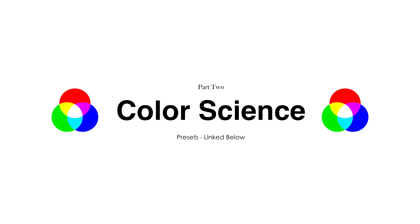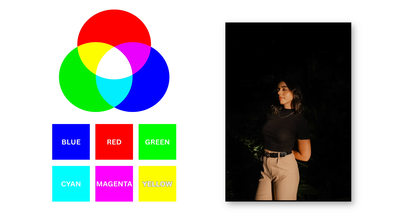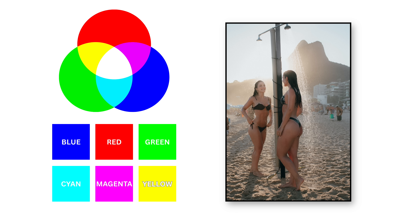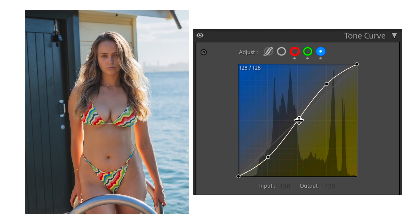We all know that an image is made up of red, green, and blue pixels — these are the primary colors of light. When they're mixed together they form secondary colors, and when red, green, and blue are mixed in equal amounts we get white. Today I'll be teaching you the color science behind great skin so we can use this knowledge of mixing primary colors to create beautiful skin tones.